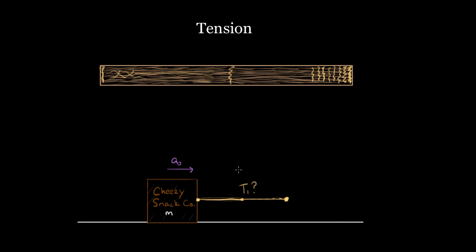Most physics problems don't want to deal with a tension gradient. So when we say the rope is massless, we don't literally mean it has no mass — the rope has to be made of something. What we mean is that the rope's mass is negligible compared to the other masses involved, so any variation in tension within the rope is insignificant. Maybe the tension at one end is 50 Newtons and at the other end it's 49.9998 — they're a little different, but it's insignificant.